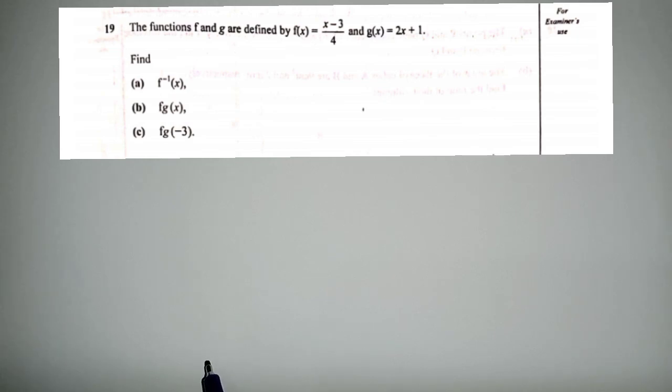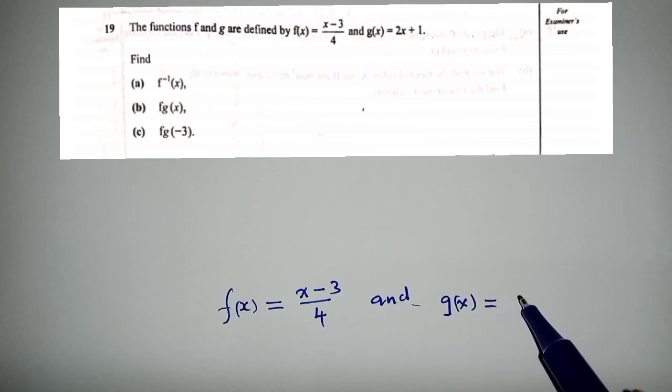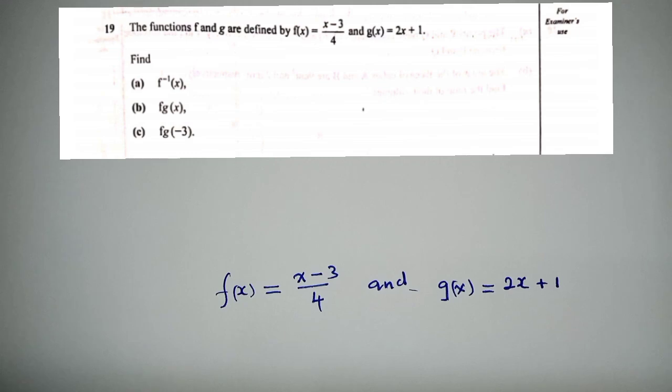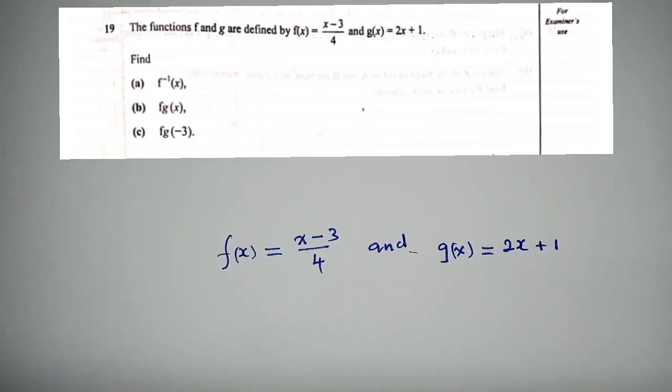For question one, they said find f inverse. In order to find f inverse, you just copy the functions the way they look. So f(x) is equal to (x - 3) / 4, and g(x) is equal to 2x + 1. These are very important.